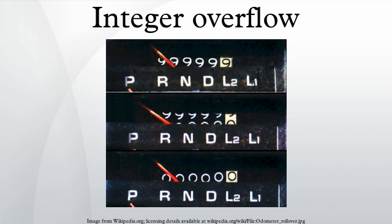In the C programming language, signed integer overflow causes undefined behavior, while unsigned integer overflow causes the number to be reduced modulo a power of 2, meaning that unsigned integers wrap around on overflow. This wrap-around is the cause of the famous split screen in Pac-Man. A wrap-around corresponds to the fact that, for example, if the addition of 2 positive integers produces an overflow, it may result in an unexpected result.